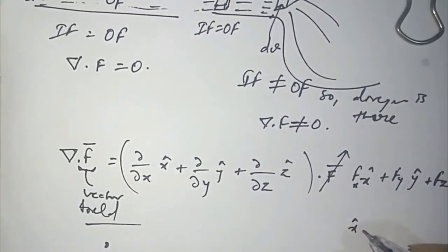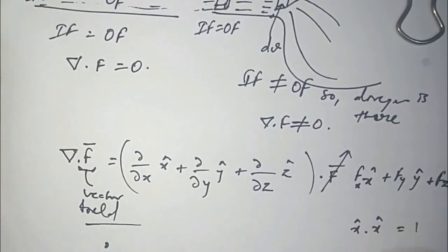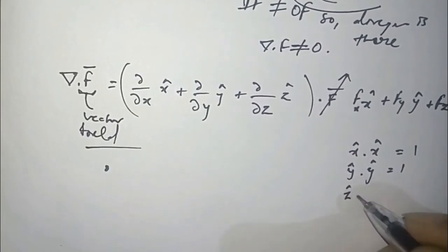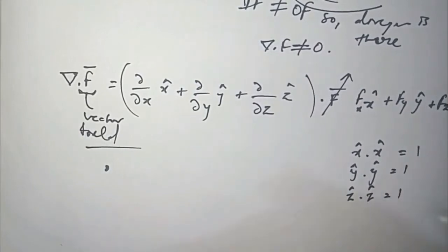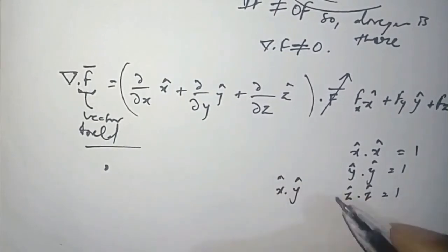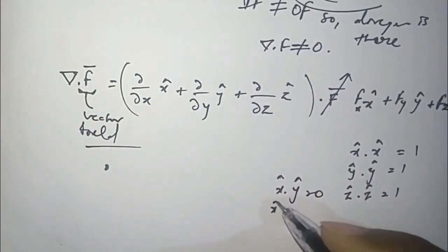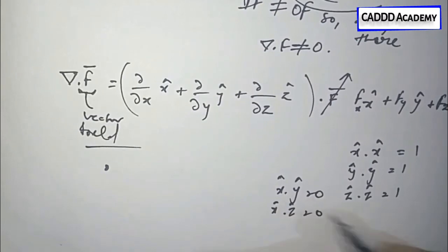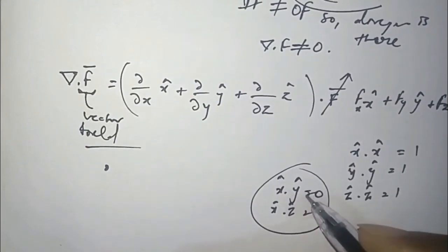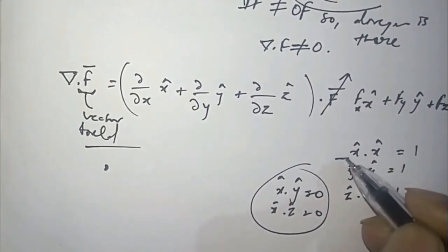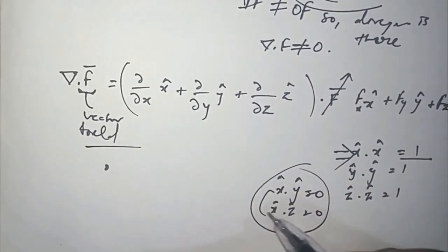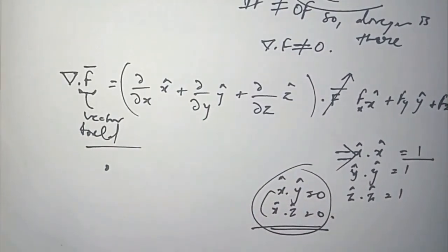As we know, x-cap dot x-cap equals 1, y-cap dot y-cap equals 1, and z-cap dot z-cap equals 1. If we cross different unit vectors — x with y, x with z, or y with z — the dot product is 0. So the dot product of the same unit vector is 1, and of different unit vectors is 0.